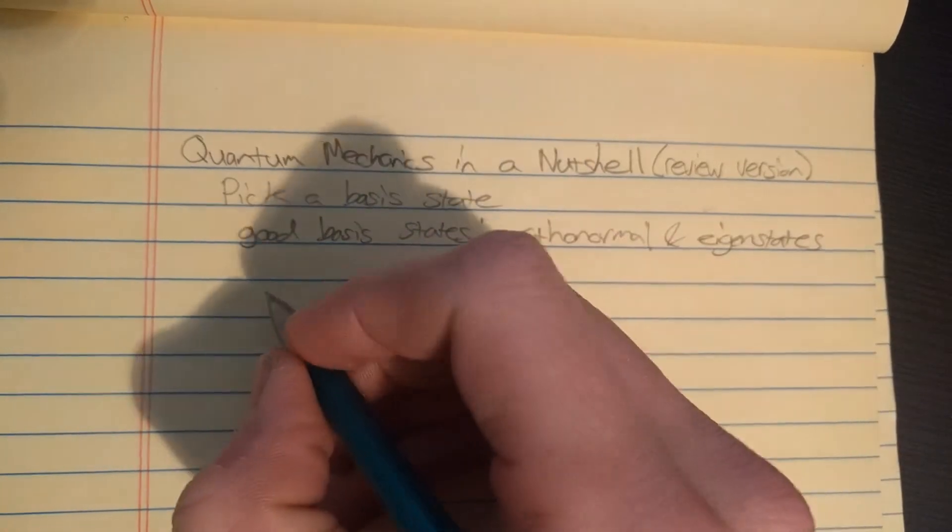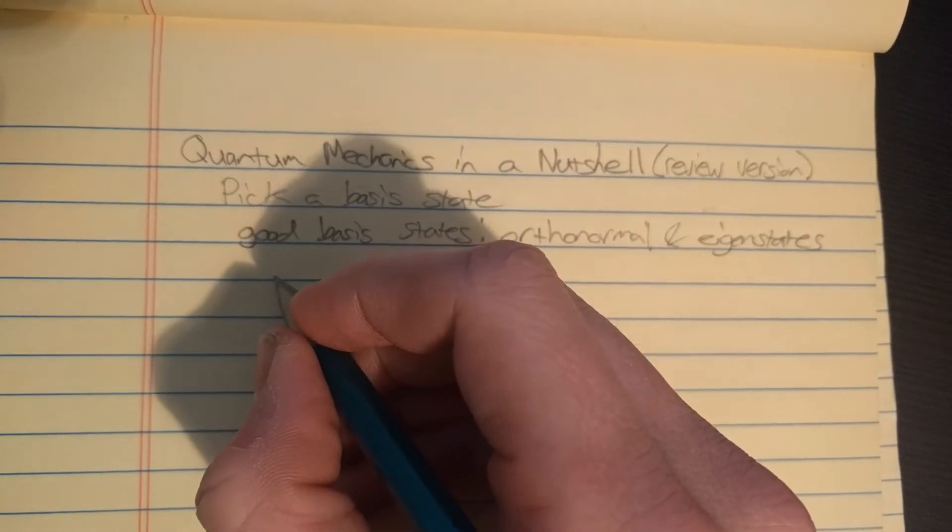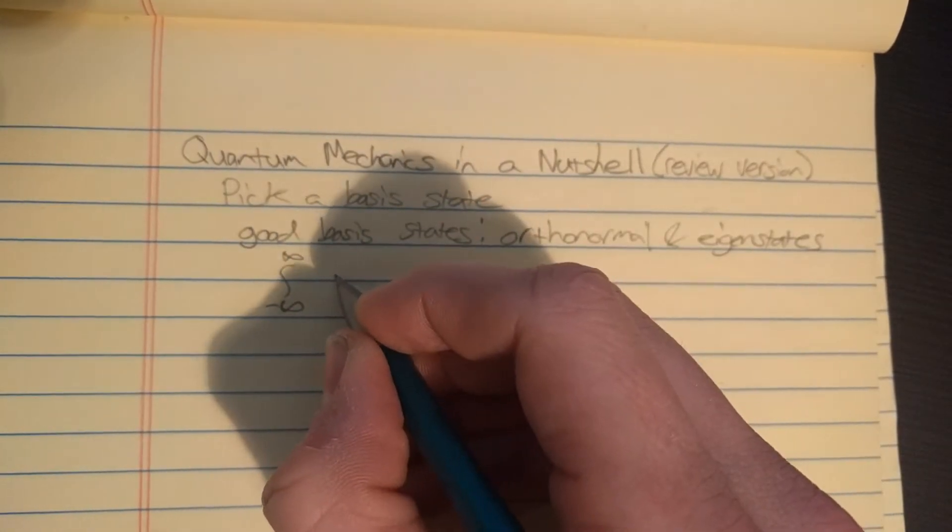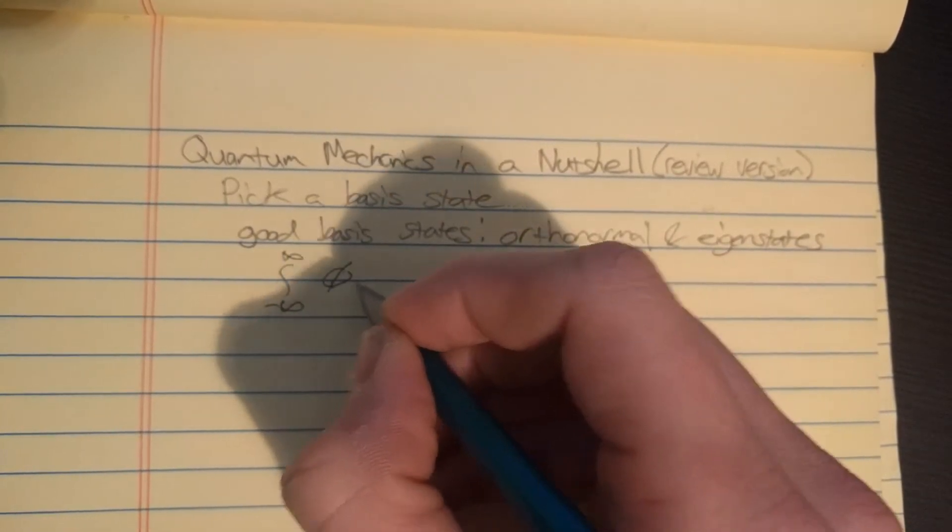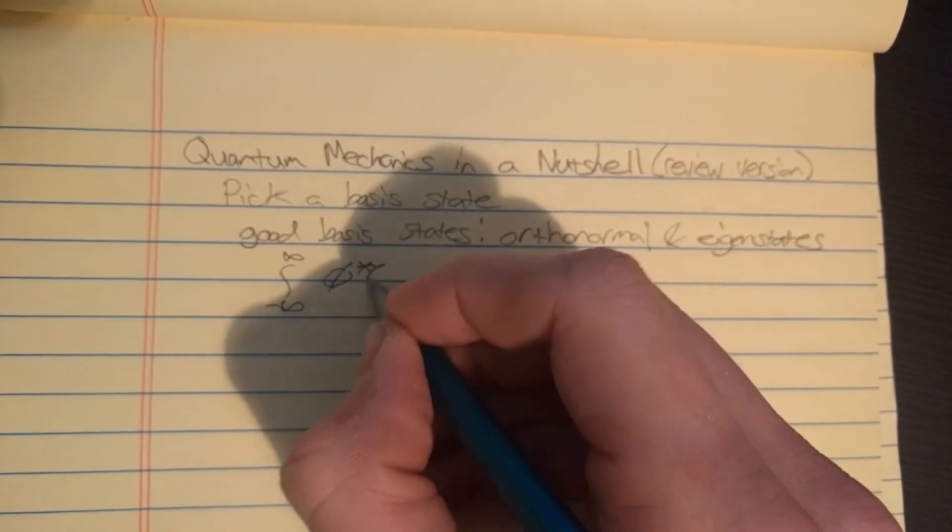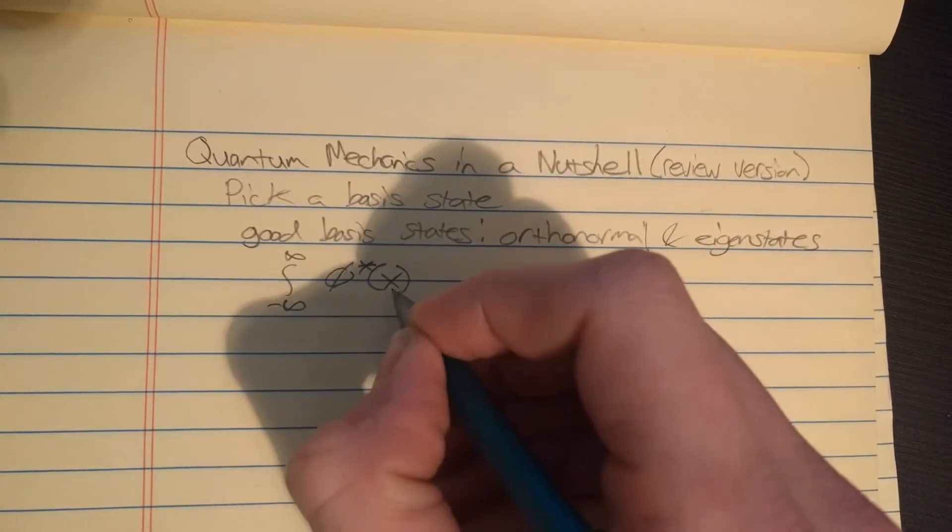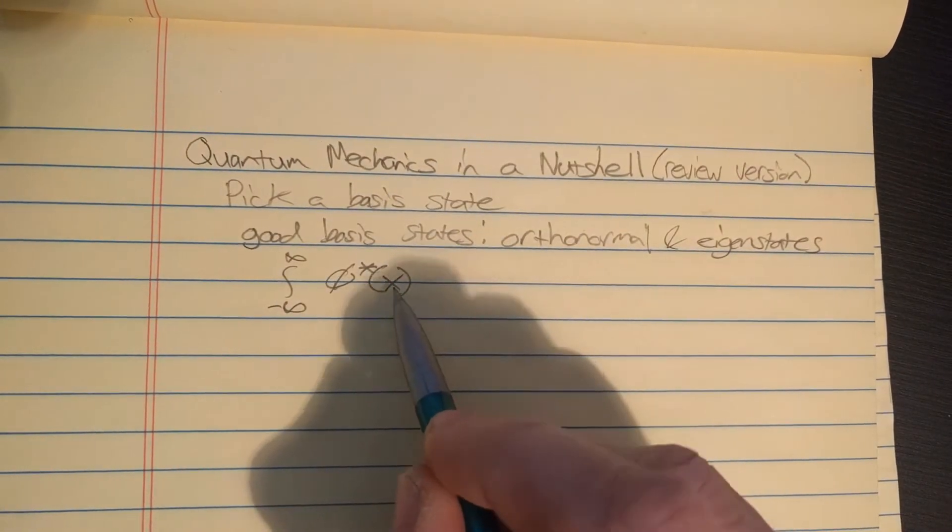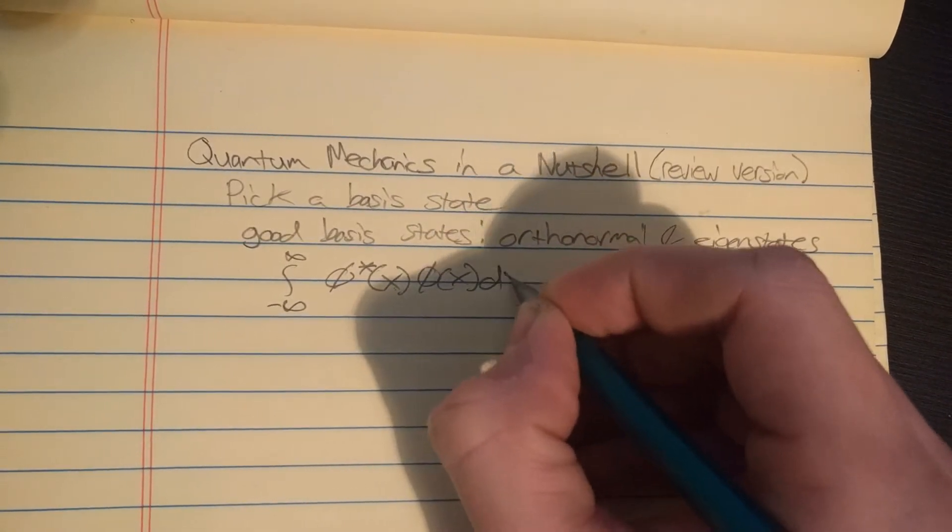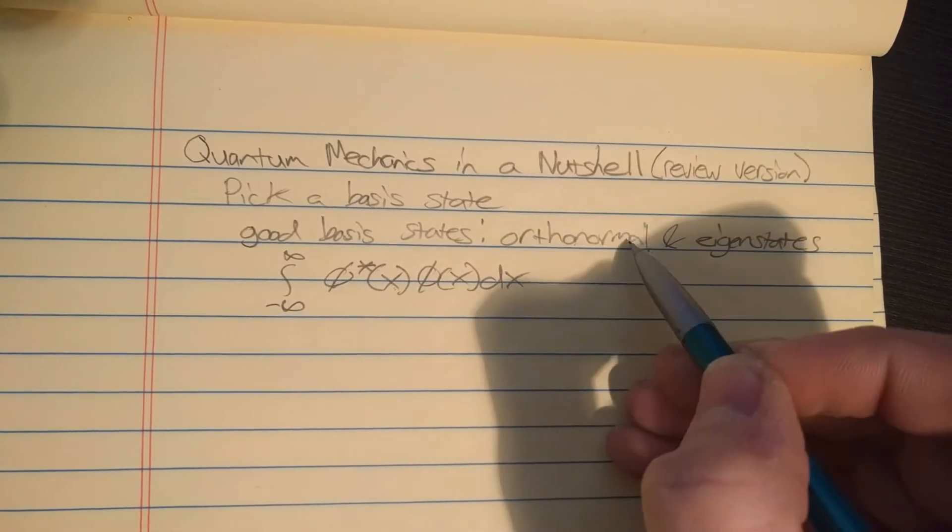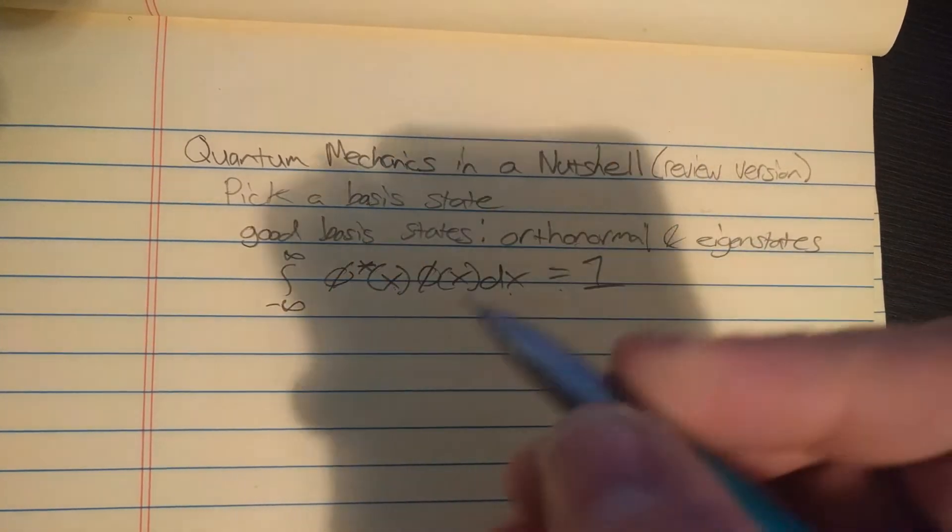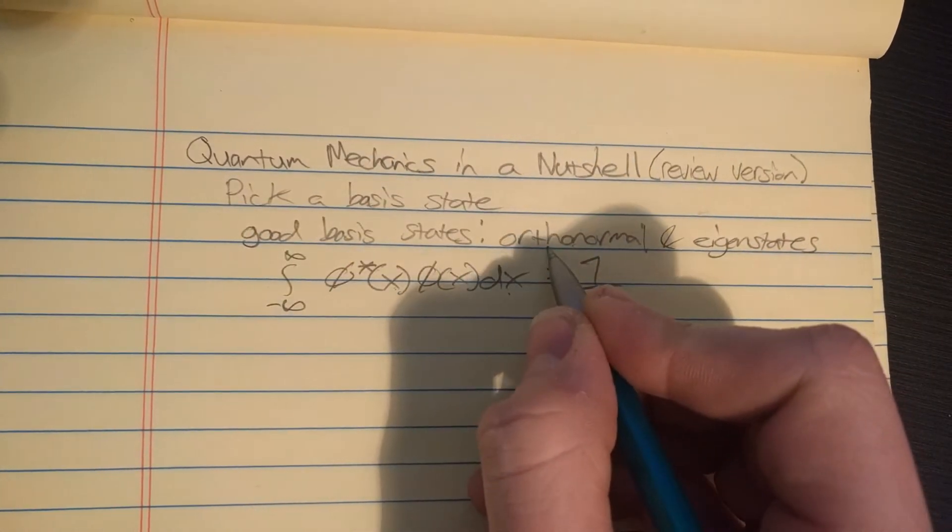By orthonormal, I mean if you integrate your state - let's call our basis state psi - you take the complex conjugate of that, and let's say it just depends in space by x. So the normal part of orthonormal requires that this integral here be one.